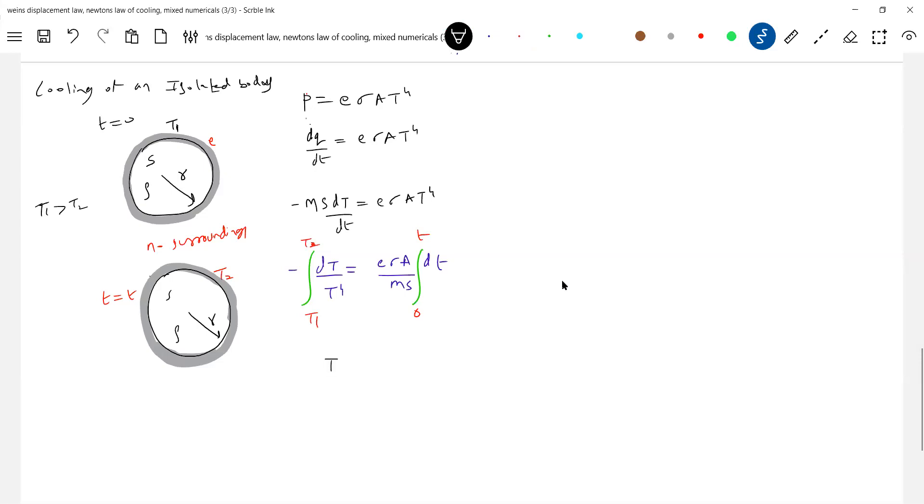Okay, this will become T to the power of minus 4 dt. Look carefully at the limits I've given in red color. This will be t only. T to the power of minus 4, so this will be T to the power of minus 3 by minus 3, from T1 to T2.